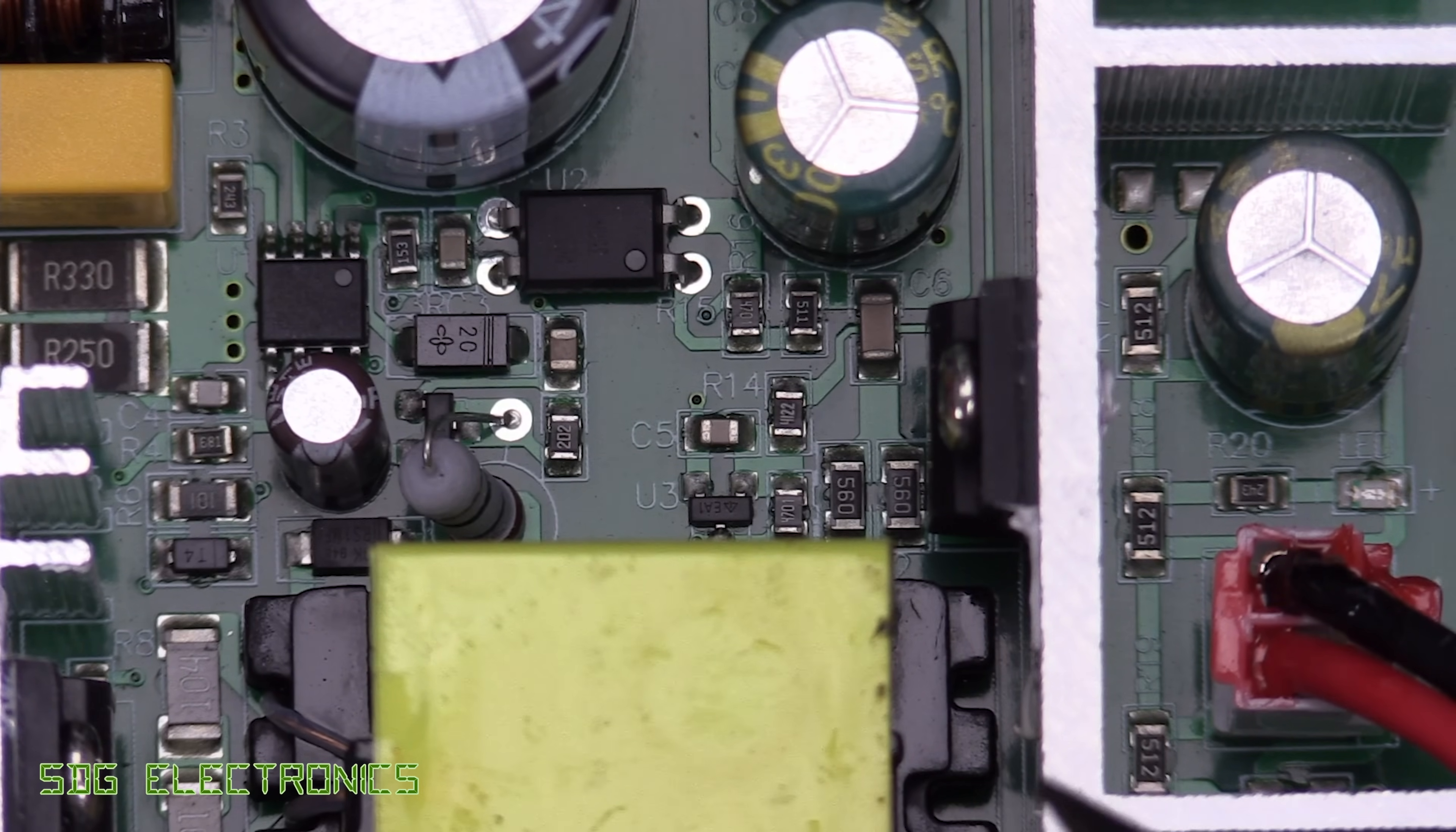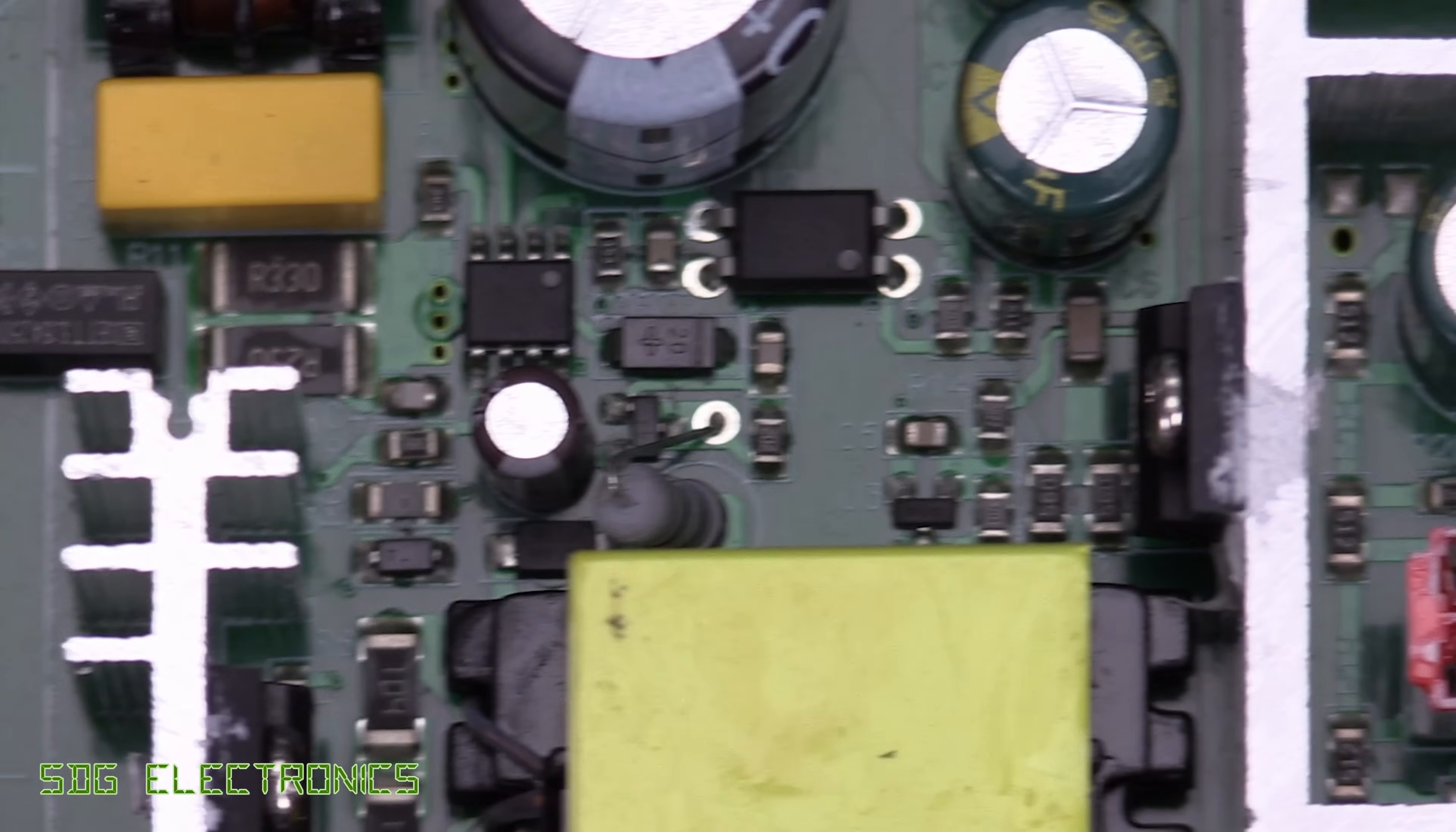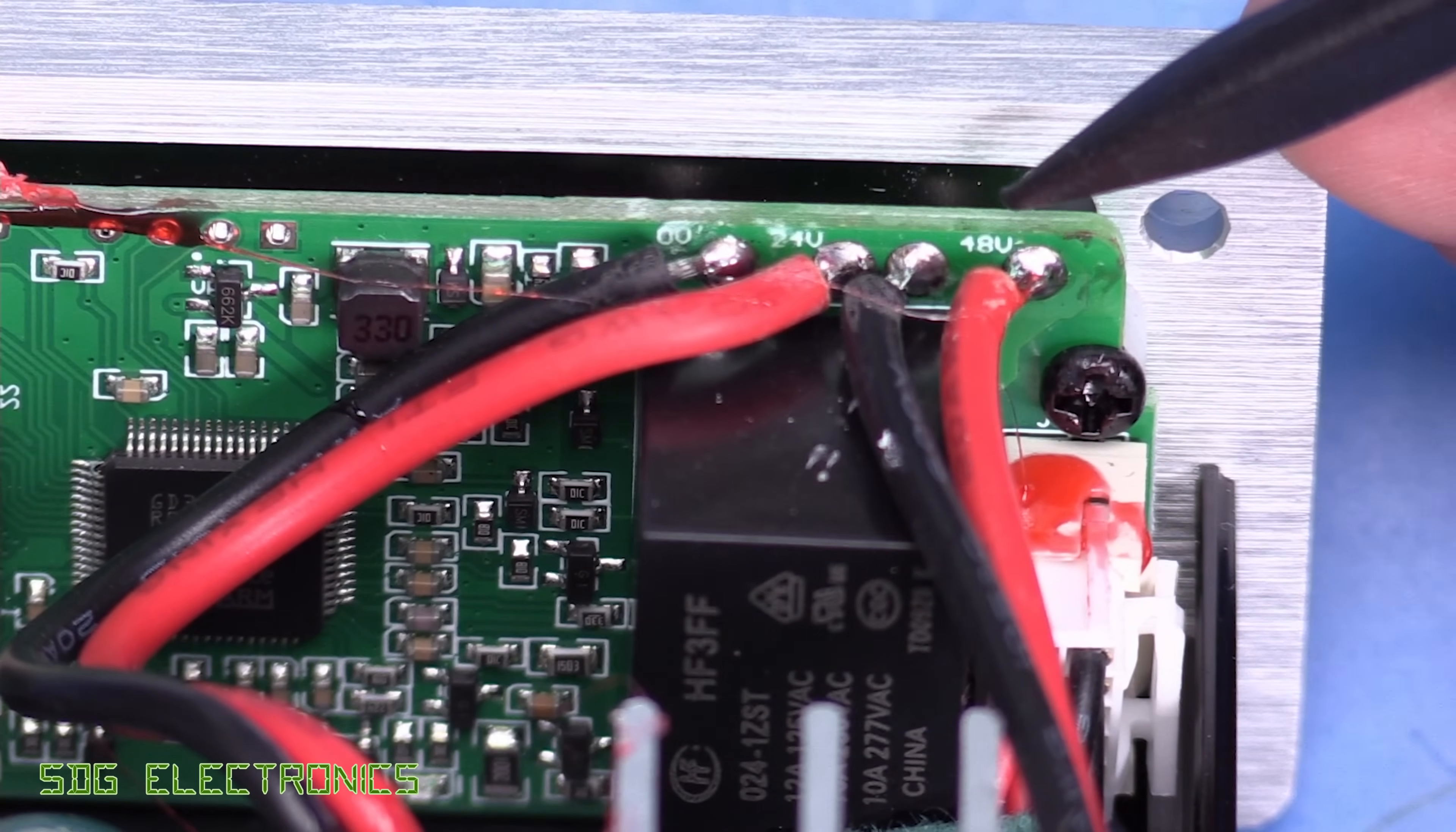At first glance, it looks like we've got two identical power supplies. So these are the feedback components just here. If we take a note of those values, it looks to be exactly the same as on this one here. So I think these are two 24 volt power supplies. And then when we look at the front panel board where these wires connect to, it says 24 volts just here, and then 48 volts.